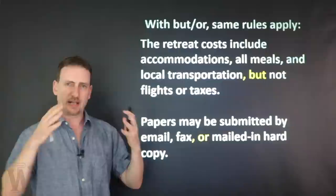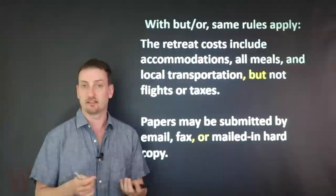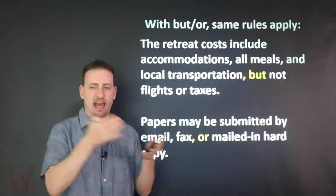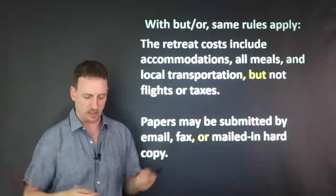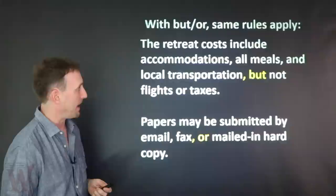AND, BUT, OR — same rules apply. For example: 'The retreat costs accommodations, all meals, and local transportation, but not flight or taxes.' You can have AND and BUT together in a list. Same with OR: 'Papers may be submitted by email, fax, or mailed in hard copy.' With or without the serial comma — up to you, but be consistent.